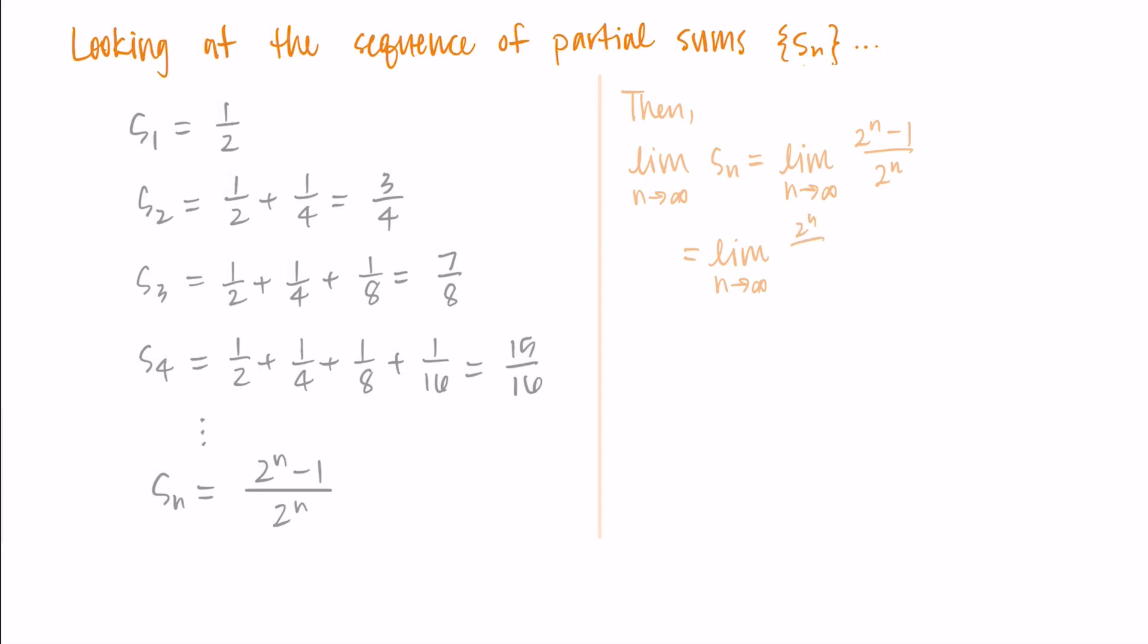So I'm going to split this up into two fractions: 2ⁿ/2ⁿ - 1/2ⁿ. Then simplifying, I'm looking at the limit of 1 - 1/2ⁿ, and that 1/2ⁿ is going to zero as n approaches infinity, so we're dividing by larger and larger values, meaning that fraction is going to zero. So really once I evaluate the limit I just have 1 - 0, which is 1.